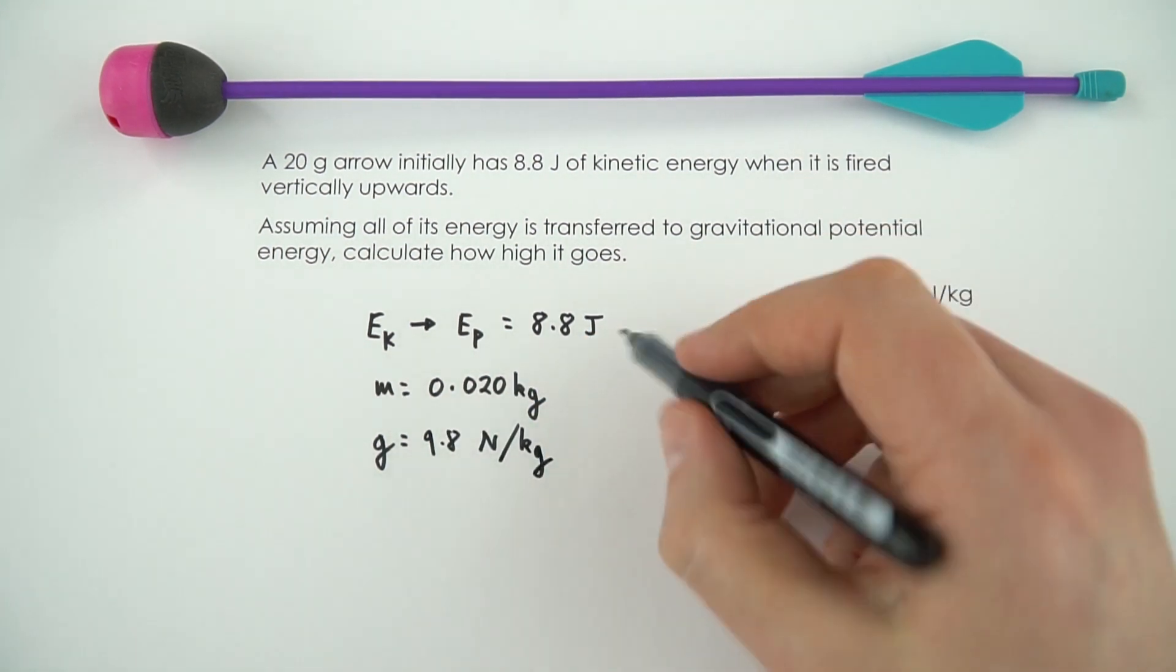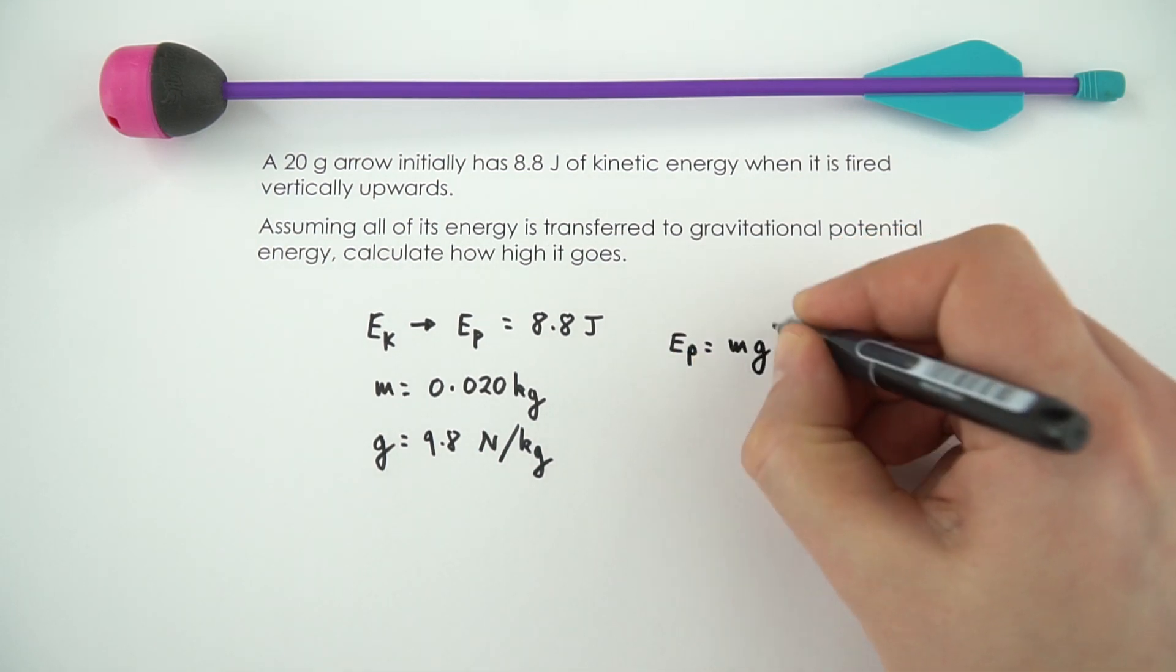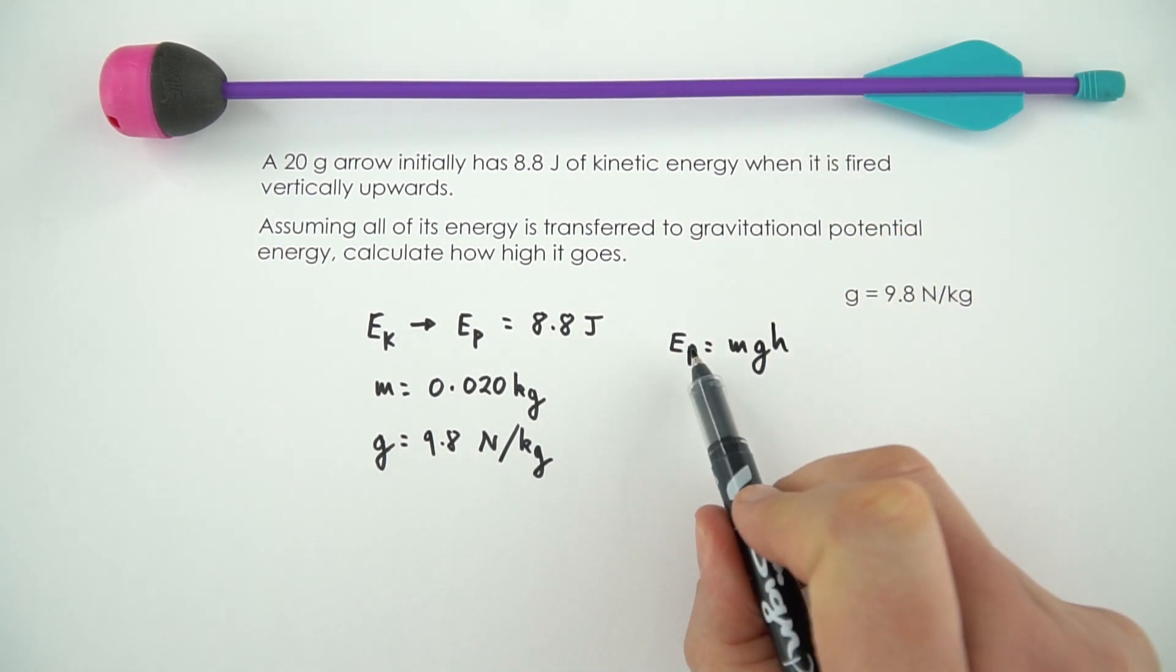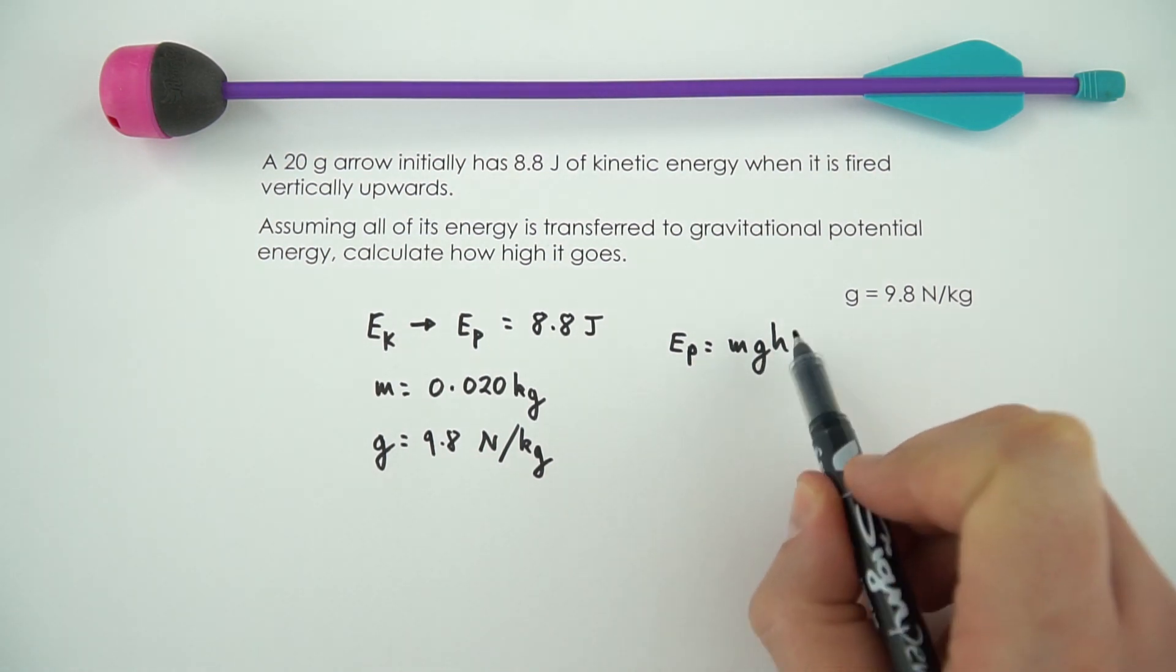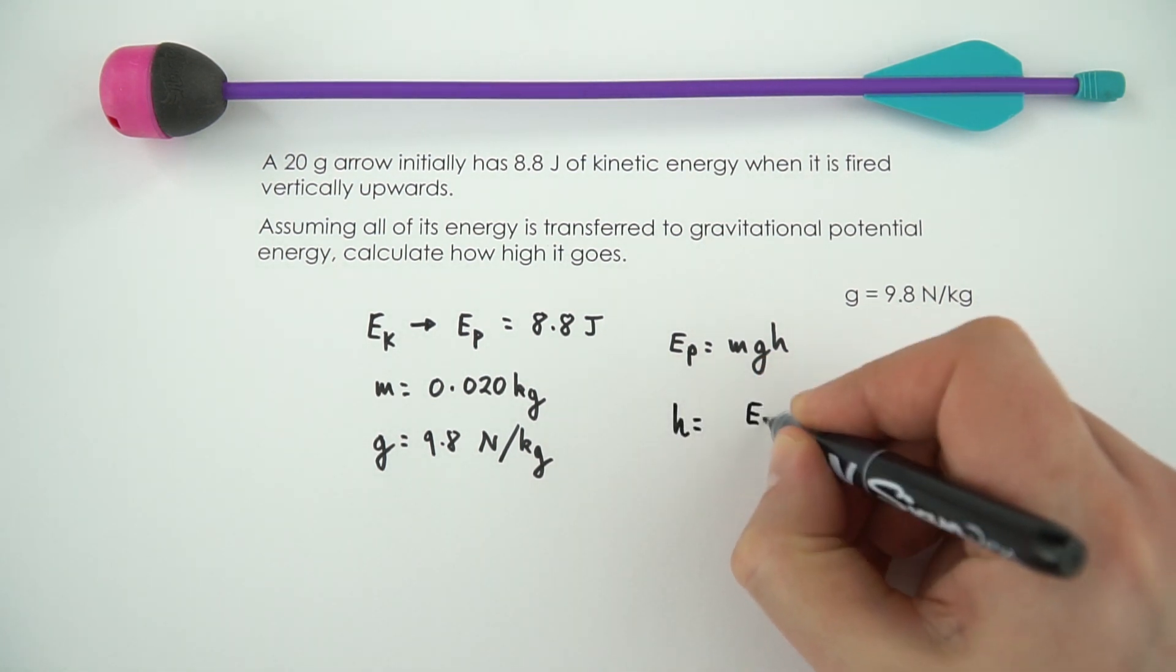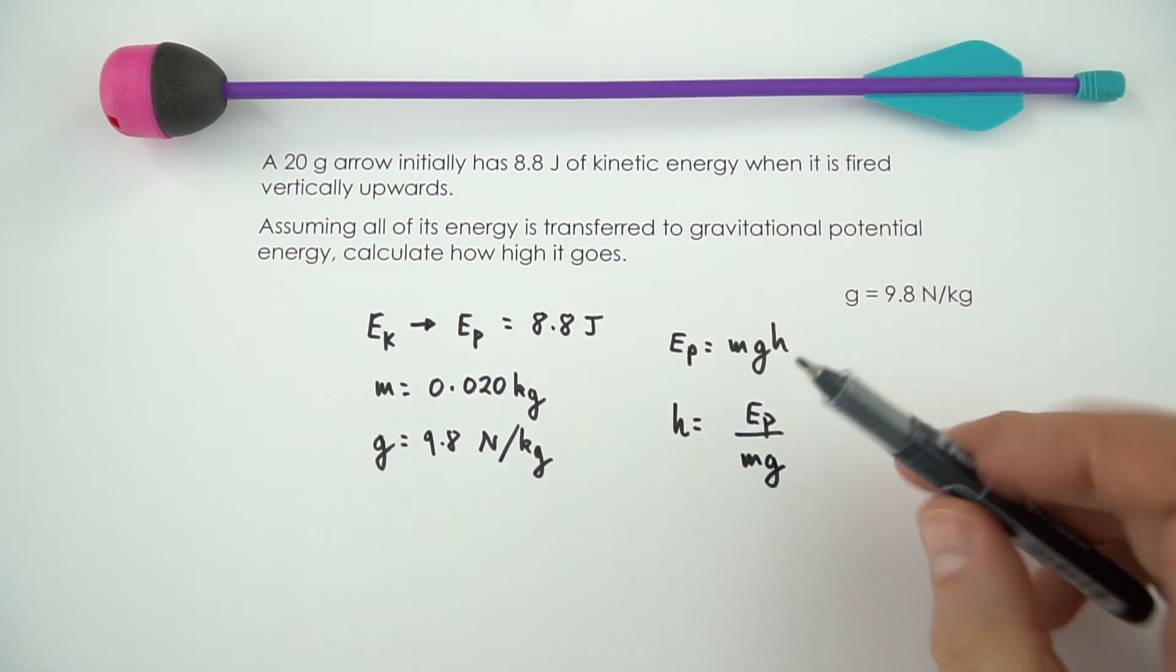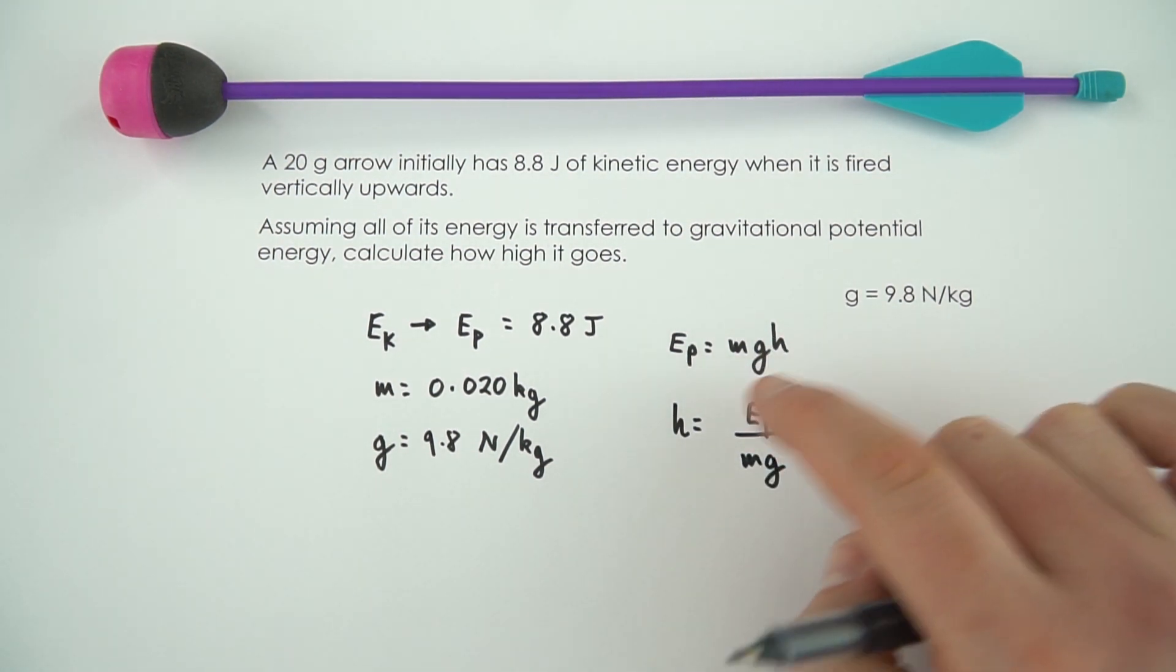We're going to use the equation EP = mgh. We know the energy, the mass, and the gravitational field strength, so we need to rearrange to make h the subject. We can do that by saying h = EP / mg. You might need to pause the video to see how that works.